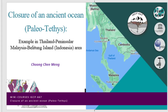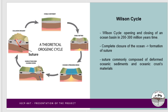Hello everyone, welcome to the sharing session under IGCP 667 project. My name is Chong Chi Minh from Malaysia. Today I'm going to share about the closure of the ancient ocean Paleotethys, taking the example in Thailand, Peninsular Malaysia, Belitung Island, and Indonesia area. Before we talk about the closure of the ocean, first we have a look at the opening and closing process of the ocean basin.